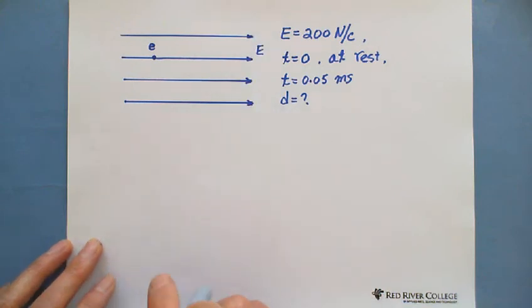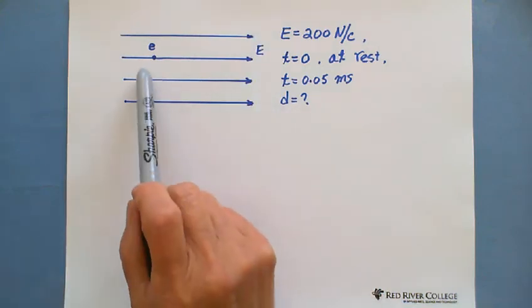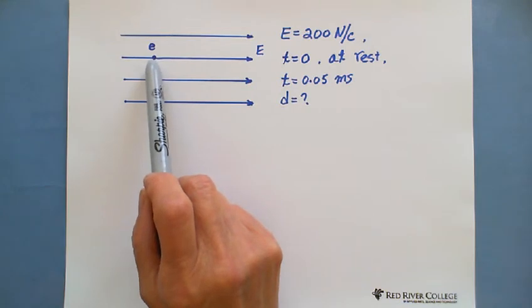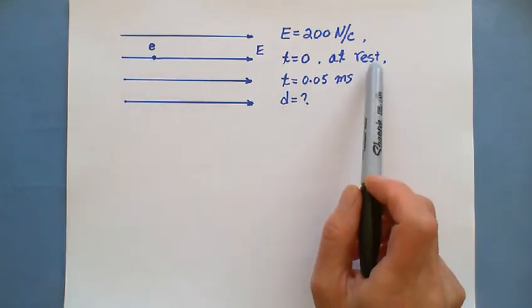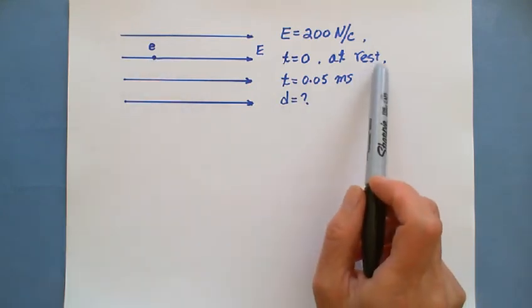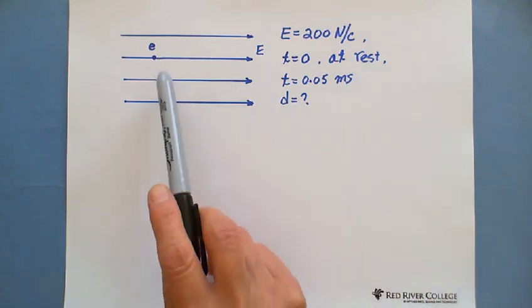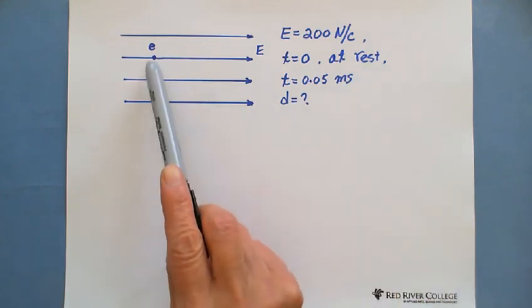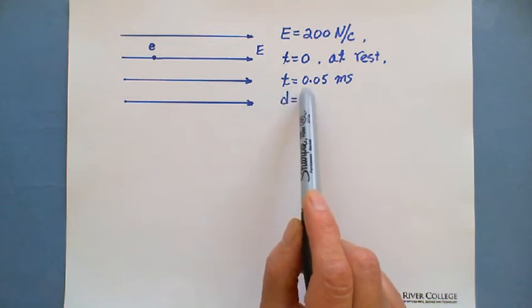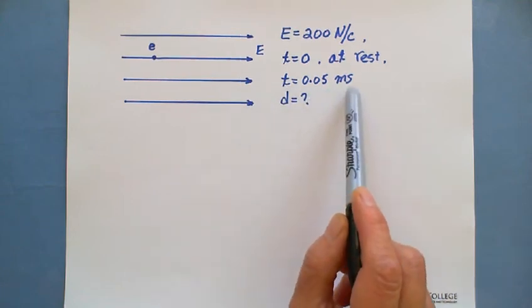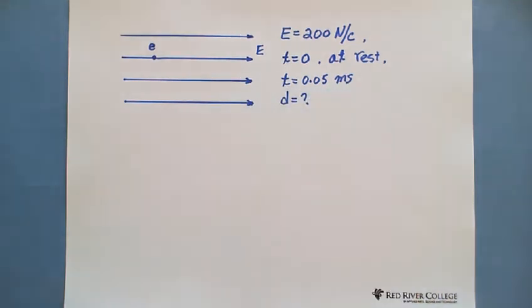So now, at t equals zero, this electron is at rest, so the initial velocity equals zero. We're looking for where is this electron after t equals 0.05 microseconds. So this question will involve both electric field formula and kinematic formula.